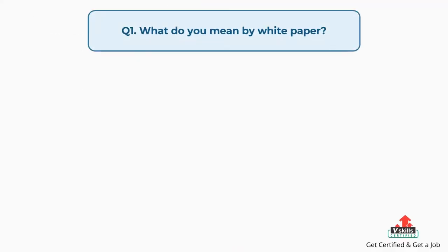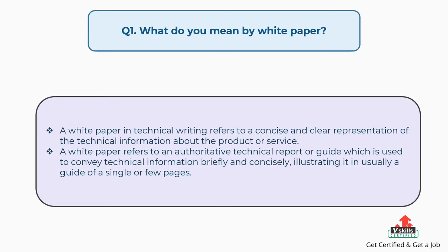Question number one: what do you mean by white paper? A white paper in technical writing refers to a concise and clear representation of the technical information about a product or service. A white paper refers to an authoritative technical report or guide used to convey technical information briefly and concisely, usually in a guide of a single or few pages.